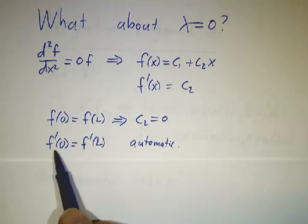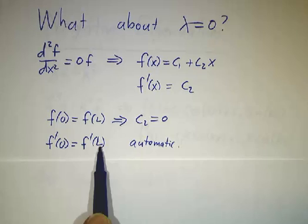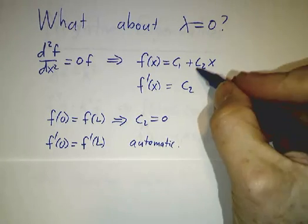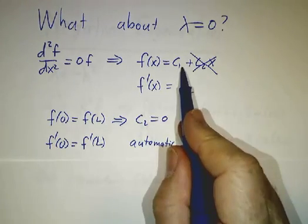Because this is c₂ and this is c₂, doesn't tell us anything new. So you need c₂ as 0, you need to get rid of that, but the function f(x) equals a constant works.